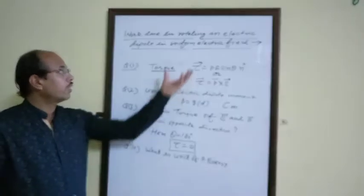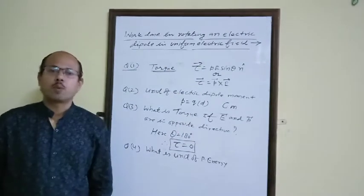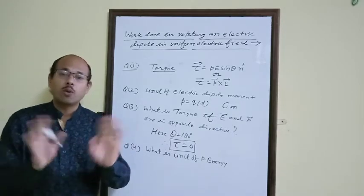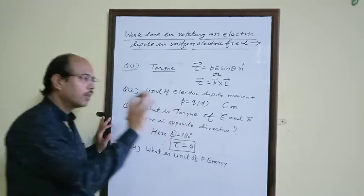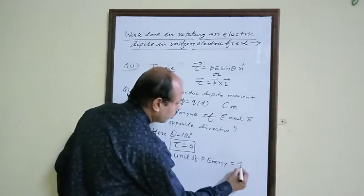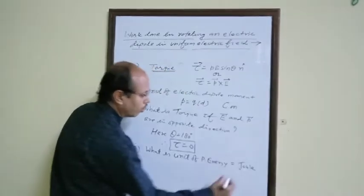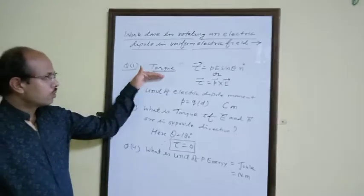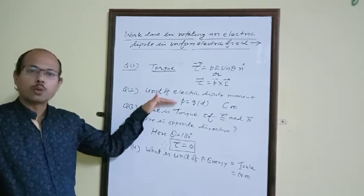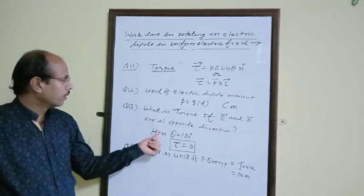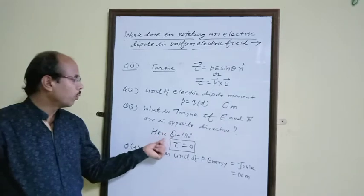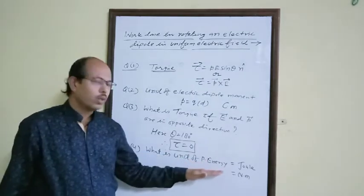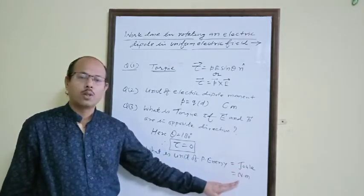Revision Question 4: What is the unit of potential energy of the dipole? Although this is electric potential energy, it is still energy, so the unit remains the same — that is, Joule.